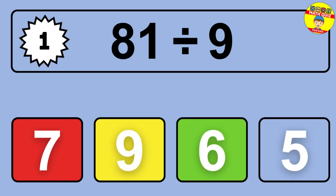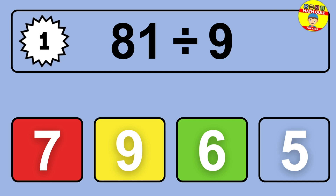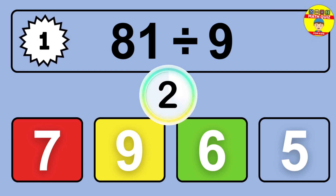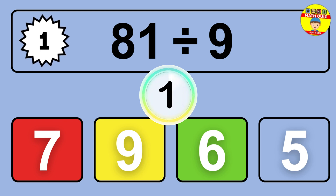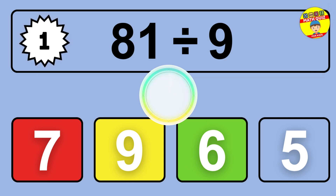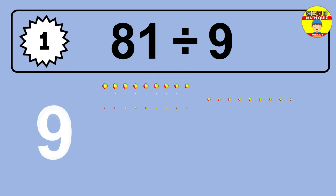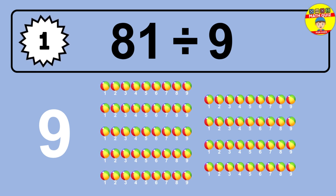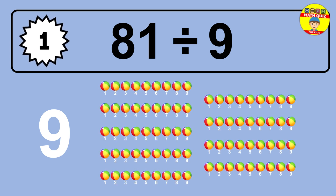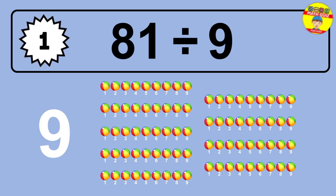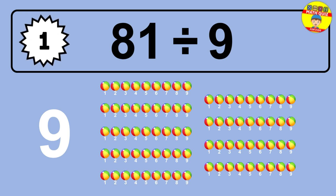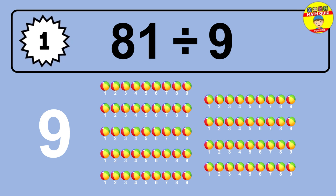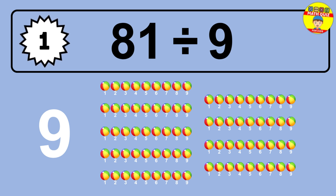81 divided by 9 is... time to think. Let's go to the solution. Divide the number 81 by 9. Each group contains 9 units, so dividing 81 by 9 results in 9 equal groups. Thus, the result is 81 divided by 9 equals 9.